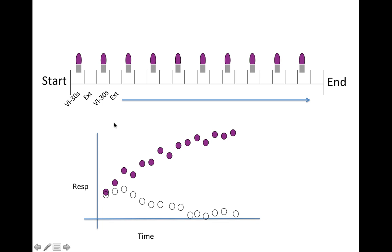A multiple schedule arrangement is commonly used in discrimination training. For example, a purple light comes on and FI-30 is in force. Then the light turns off and extinction is in force. We alternate: FI-30 with the purple light, then extinction with no light, and so on. Over sessions, animals come to respond in the purple light and not in its absence — the animal discriminates purple from not purple. The light is an SD, and stimuli associated with extinction are called S-deltas.